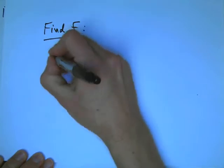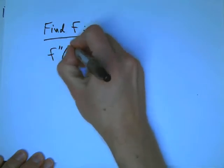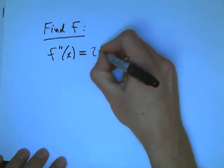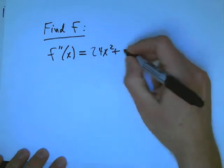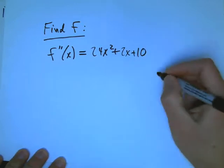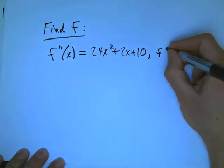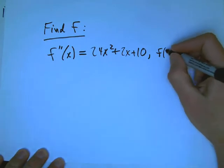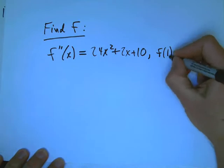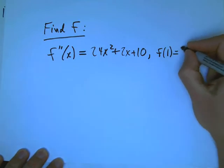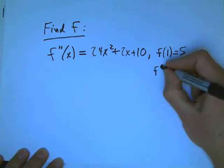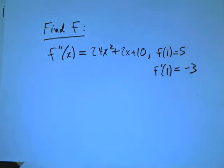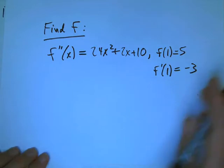Find f where I know that the second derivative of f is 24x squared plus 2x plus 10. And I know that f of 1 equals 5, and f prime of 1 is equal to minus 3. I just got this out of the book, but it's a good problem.